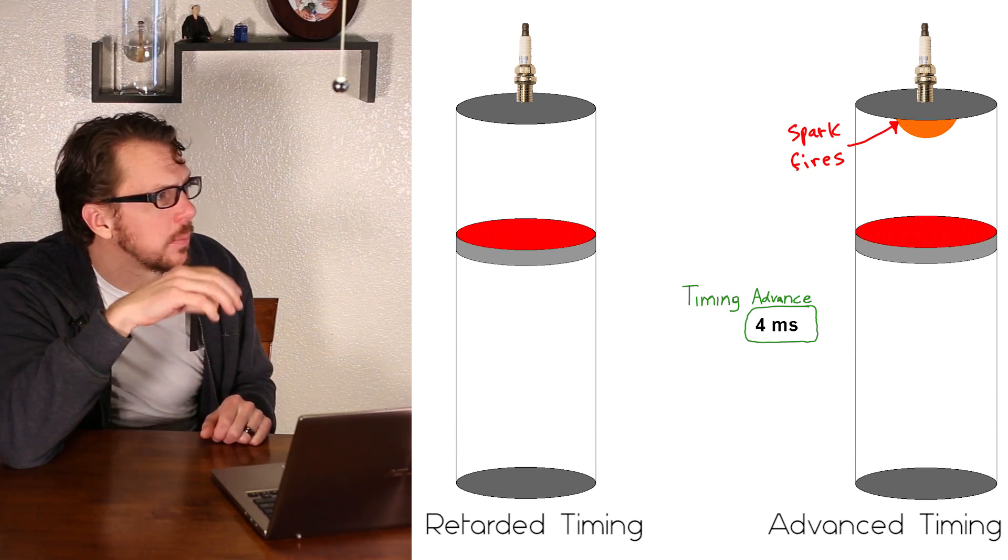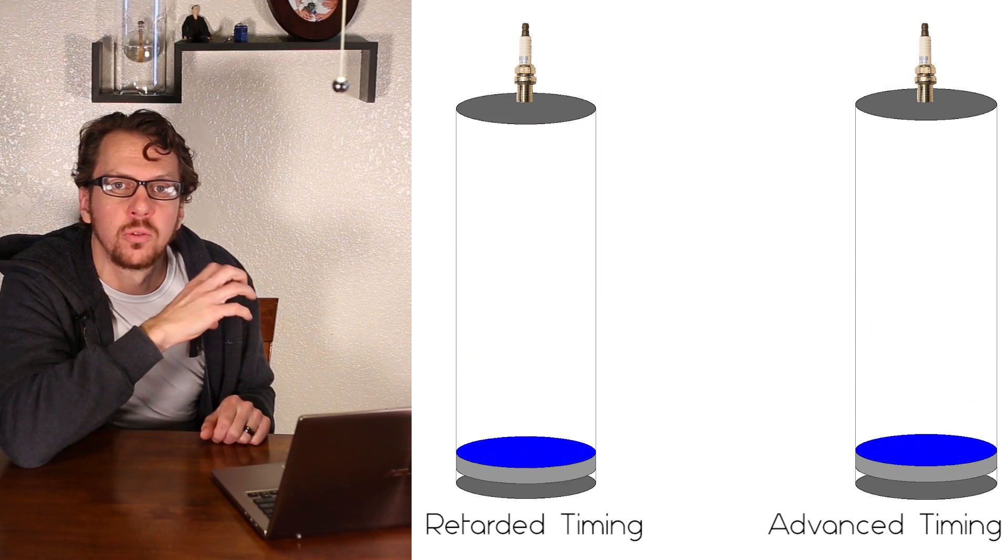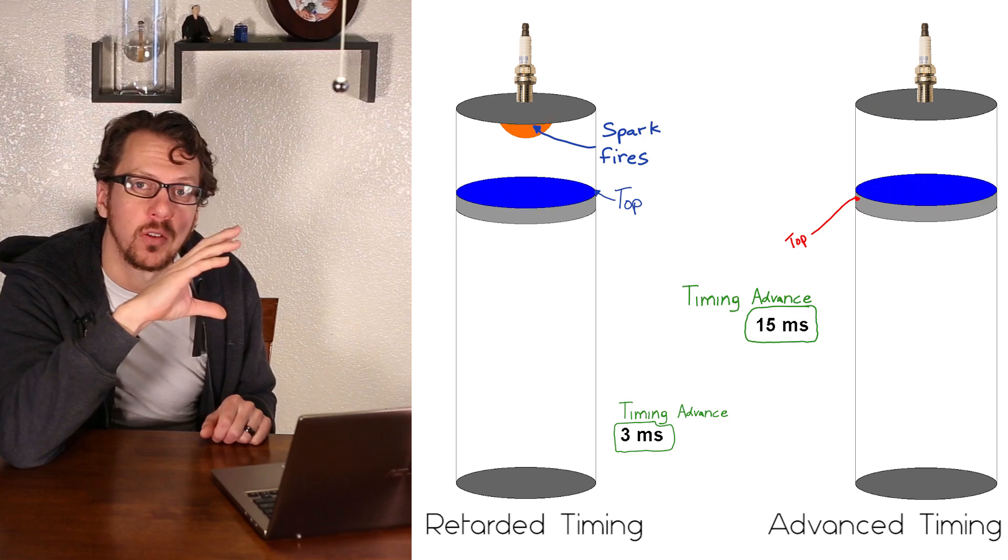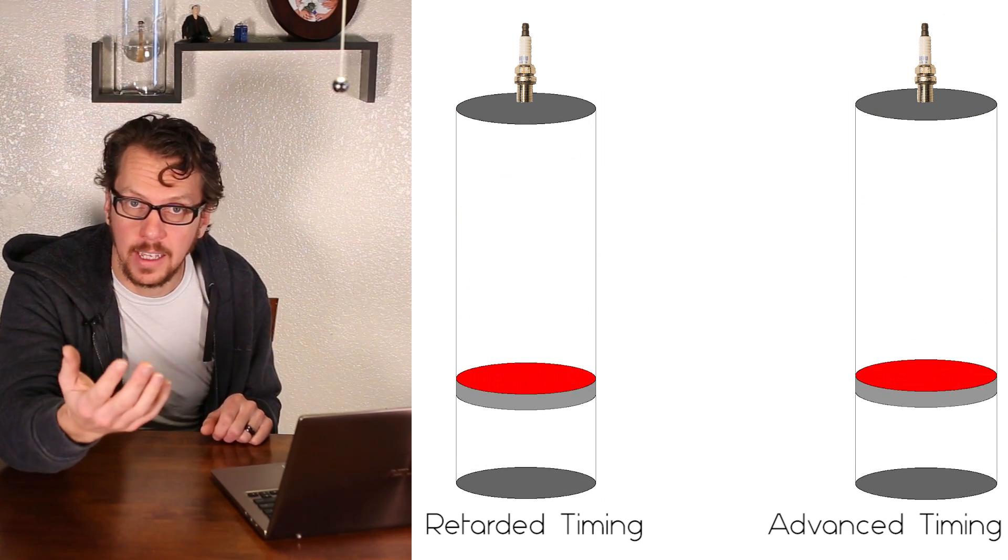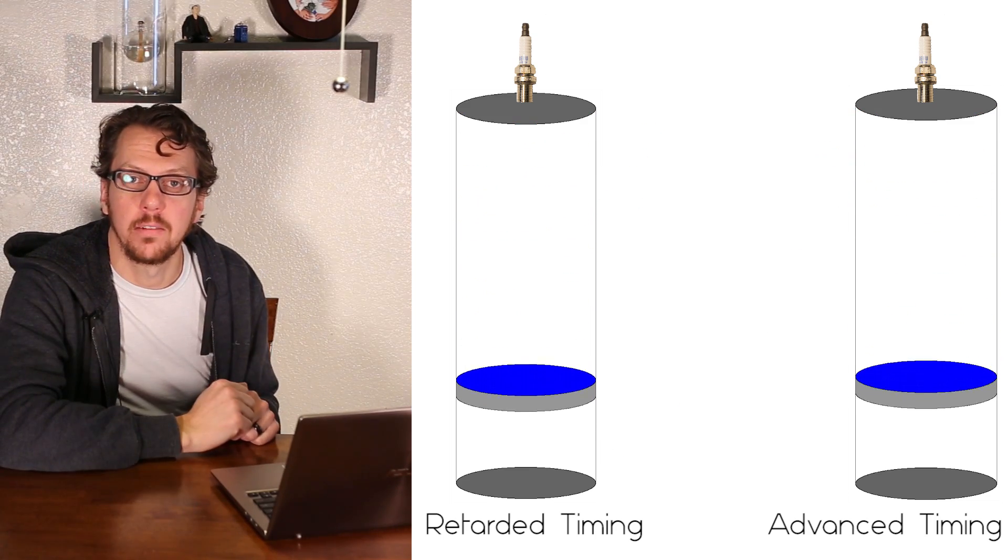Right, so quick recap. High compression ratios mean higher pressures within the cylinders. Higher pressures within the cylinders are more likely to spontaneously ignite the gas, which is why you need higher octane gas to prevent that.